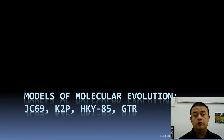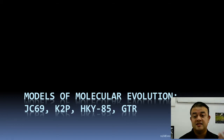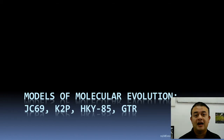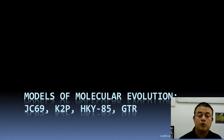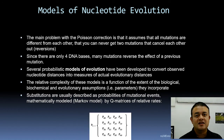Models of molecular evolution continues in this class. Let us introduce several other models like JC69, K2P, HKY85, and GTR — what these models are and why they are useful.